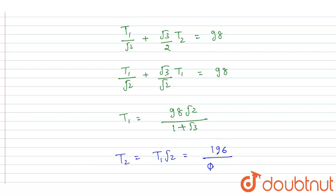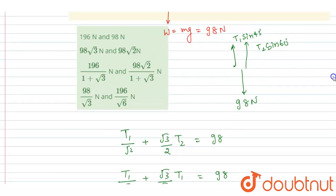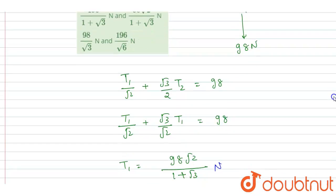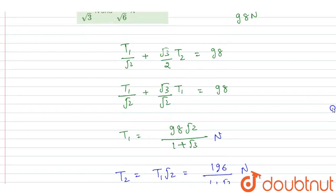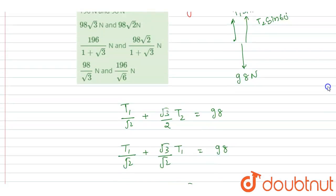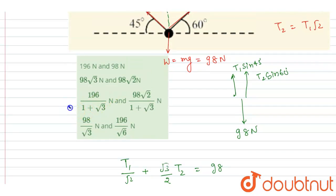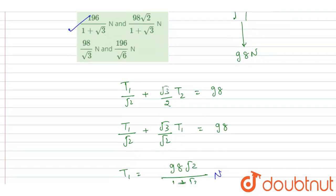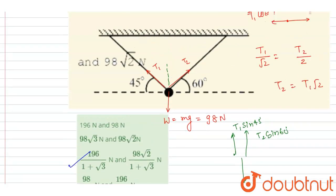196 N and 98 root 2 N. Now you can check for the option, 98 root 2 upon 1 plus root 3, and 196 upon 1 plus root 3. So you can see 196 upon 1 plus root 3 and 98 root 2 upon 1 plus root 3 are the tensions in the two strings.